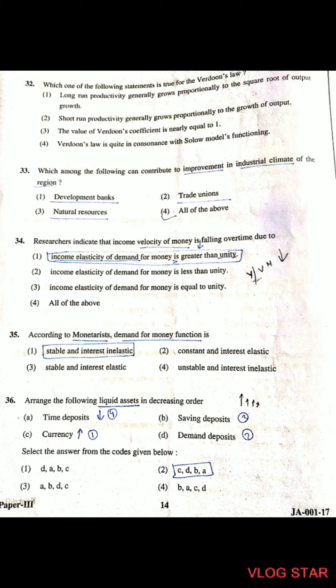Question 36: Arrange the following liquid assets in decreasing order. Currency has the highest liquidity, followed by demand deposits, then saving deposits, and time deposits have the lowest liquidity. So the order is: currency, demand deposits, saving deposits, time deposits.